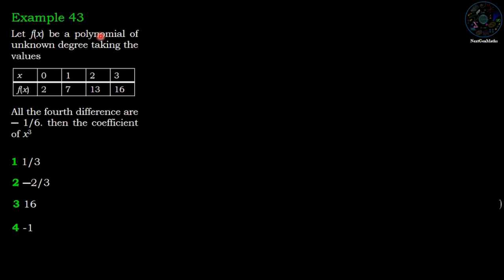Let f(x) be a polynomial of unknown degree taking the values: when x equals 0, f is 2; when x equals 1, f is 7; when x equals 2, f is 13; and when x equals 3, f is 16.